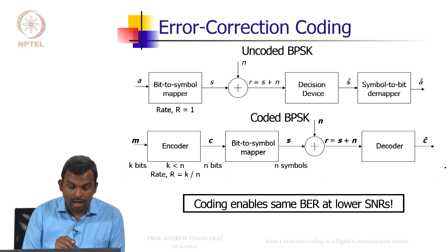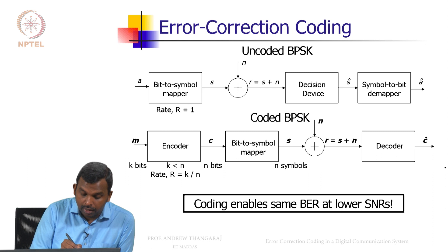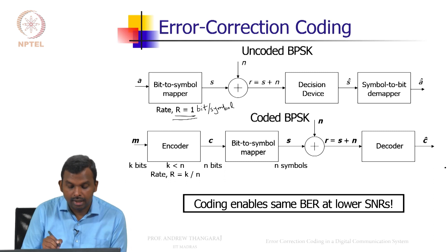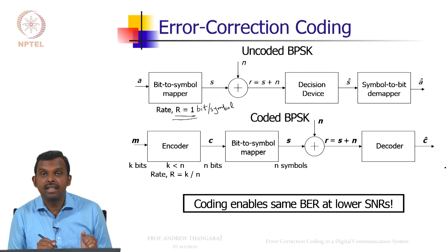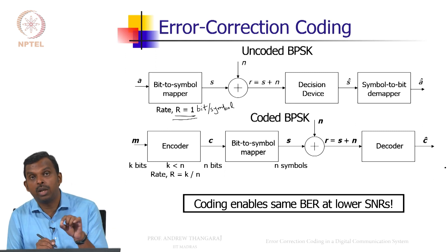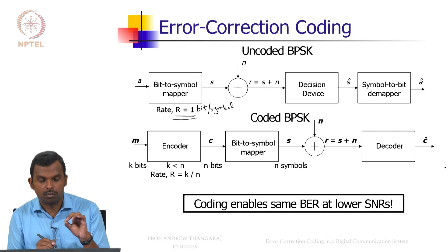The rate R is said to be 1 here, 1 bit per symbol. Every symbol carries 1 bit of information. Every bit is converted into only 1 symbol. So your rate is 1, and that is the uncoded BPSK.